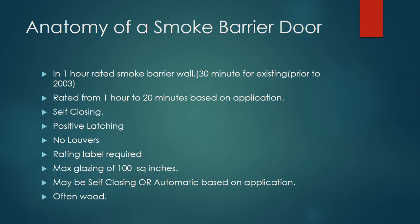With smoke, there's no heat to close a fusible-linked louver, so louvers are not permitted on smoke doors. This creates problems when spaces are converted — for example, when a server or electronic equipment with heat load is placed in a room never intended for it, and staff try to add louvers for ventilation. If it's a smoke door, you simply cannot do it. Rating labels are required for smoke barrier doors, and maximum glazing is typically 100 square inches.